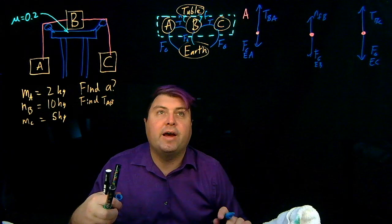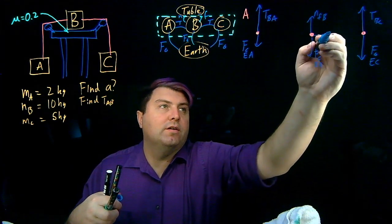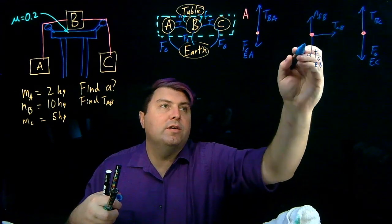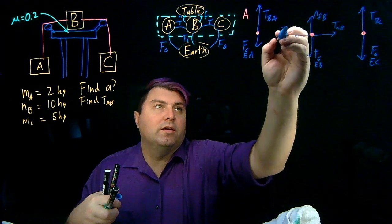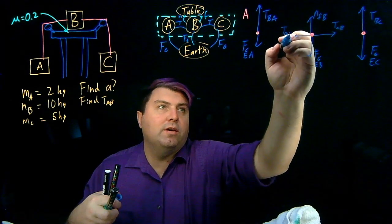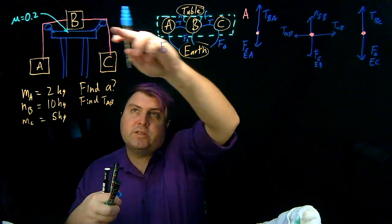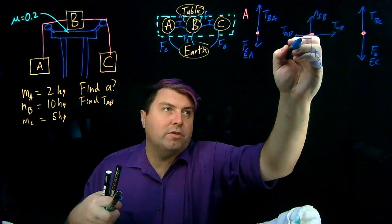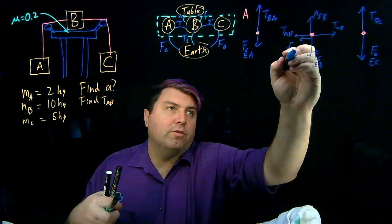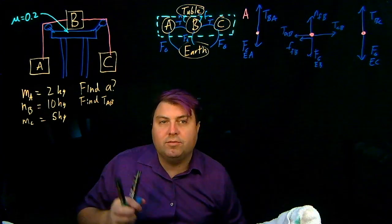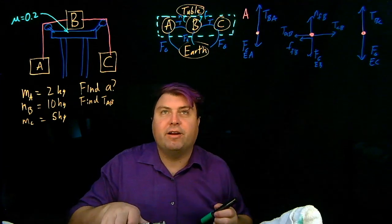And then we have the force from C. So this is tension CB. And then we have the tension from A, tension AB. And our fifth force is that friction. And we're going to guess that B is going to move to the right. So we can draw friction from the floor on B. So this is our free body diagram. Everything's going great with it.